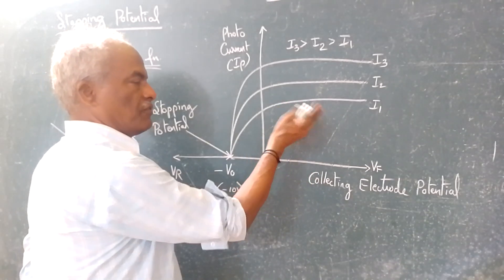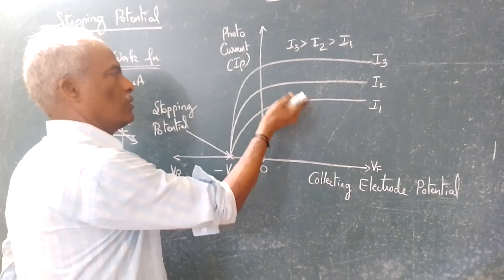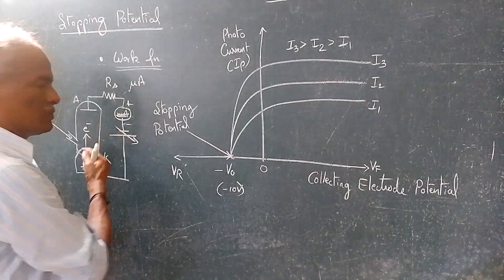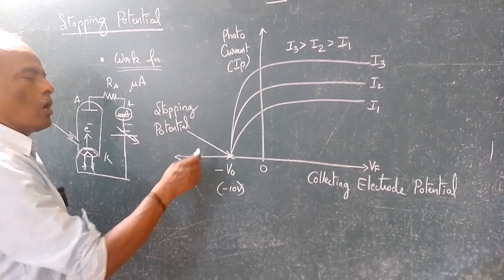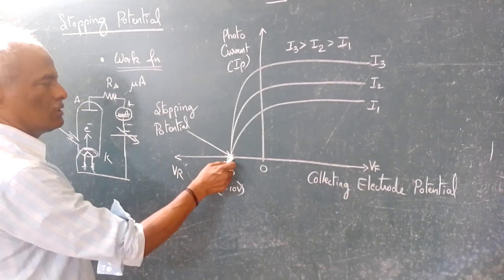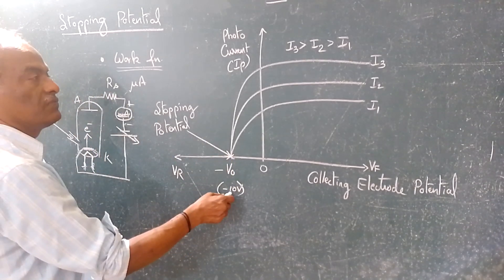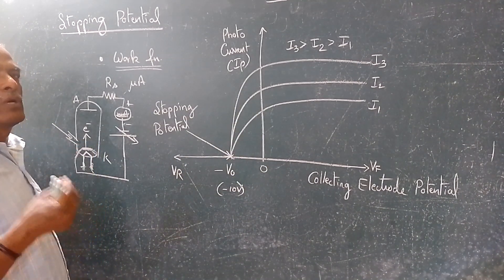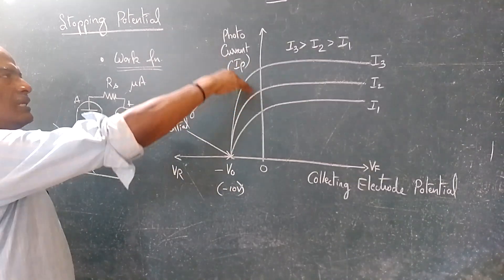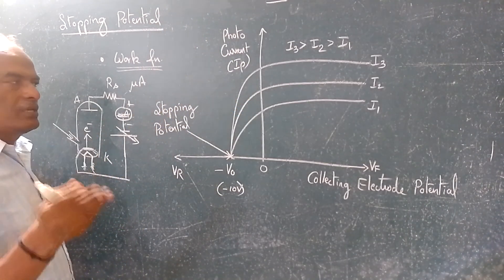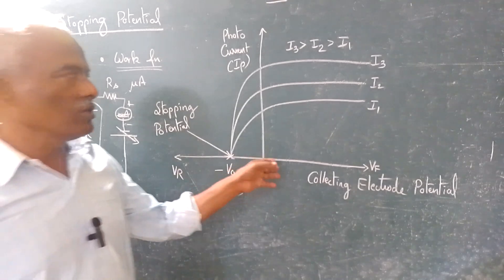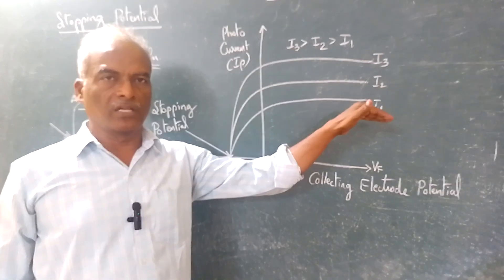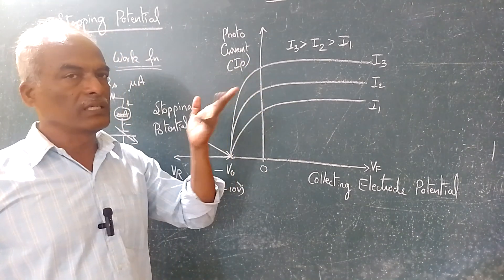Whatever may be the intensity — whether you fix the intensity of light as I1, I2, or I3 — when a reverse voltage is given to the photocell, all will converge to one single point. That is called the stopping potential, and it is fixed for the particular cathode material. For forward bias also, looking at the graph, the current is increasing and at one point it gets saturated — no more photo current is released.